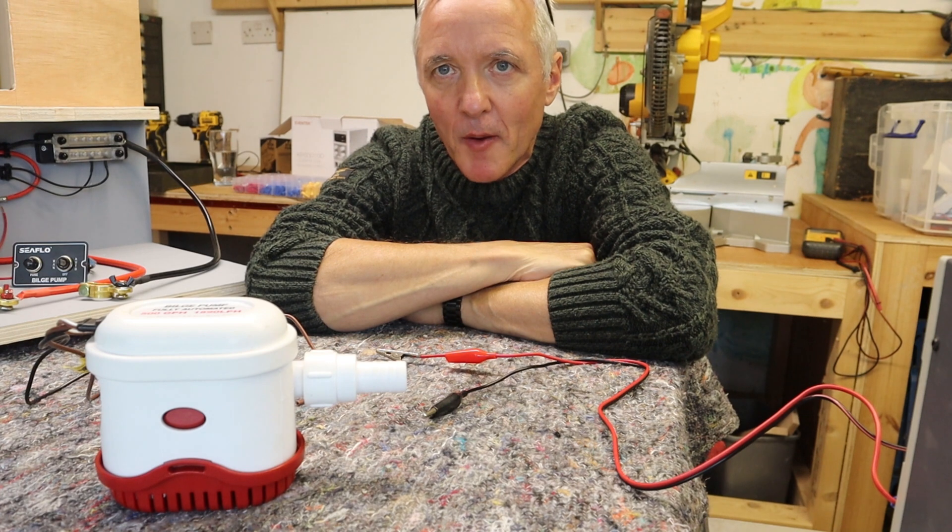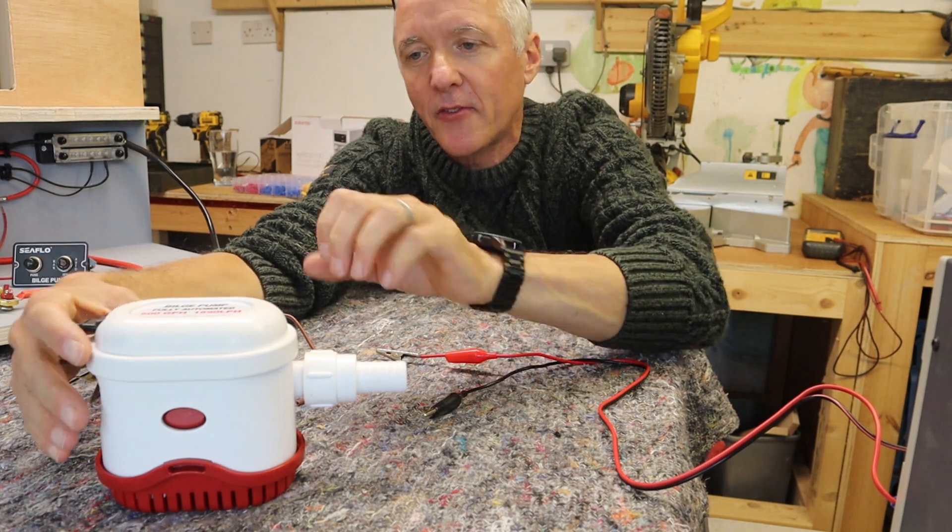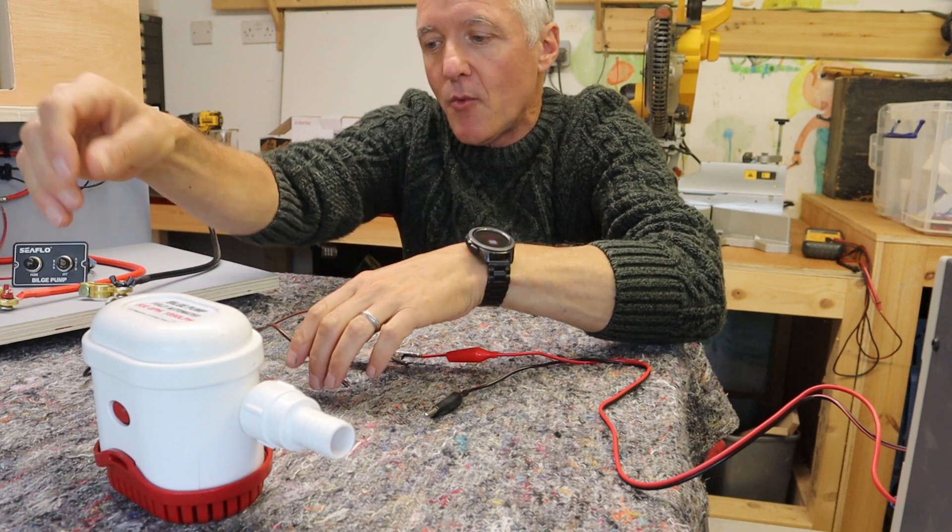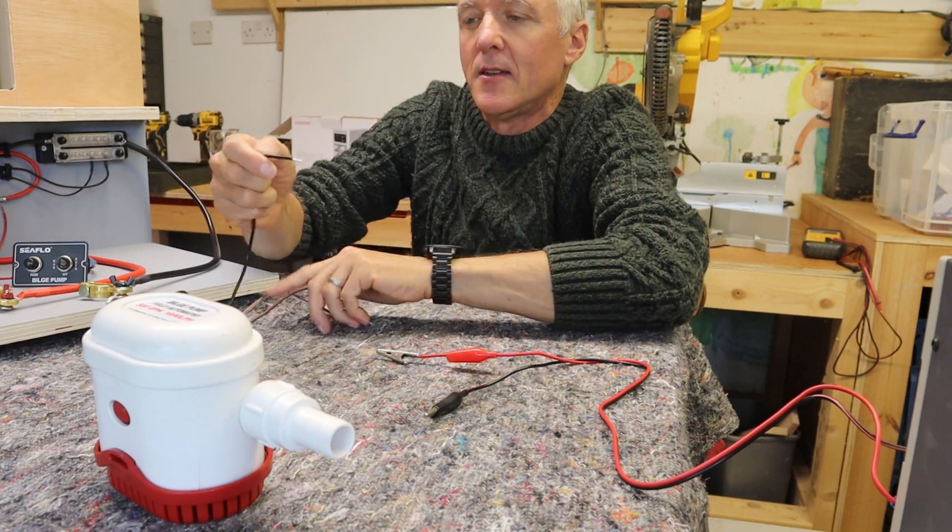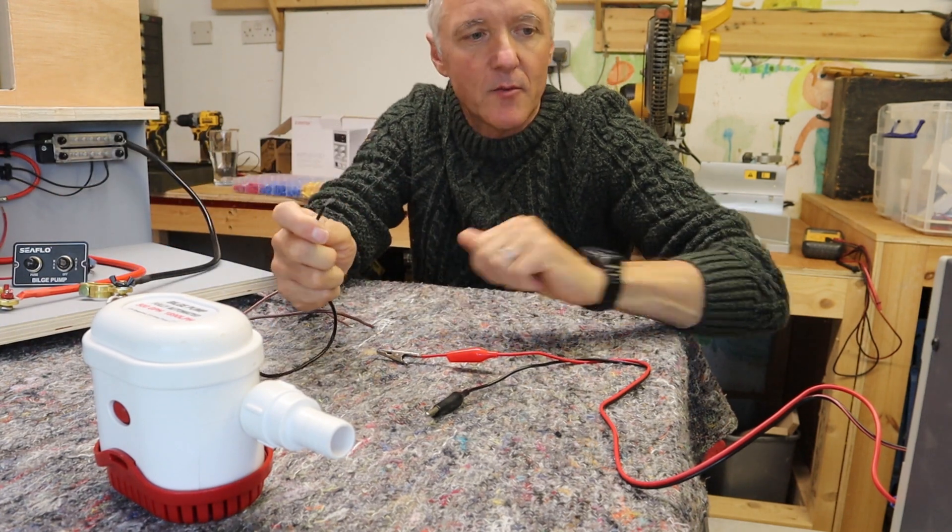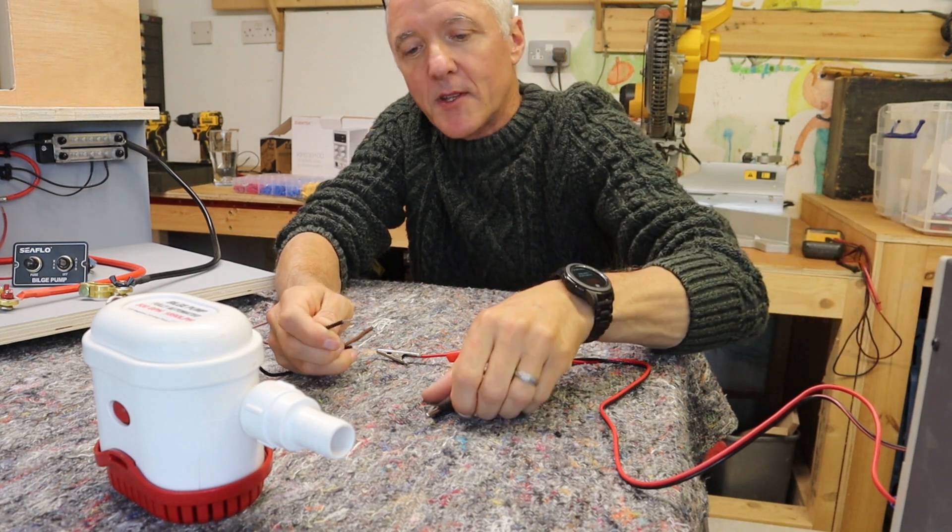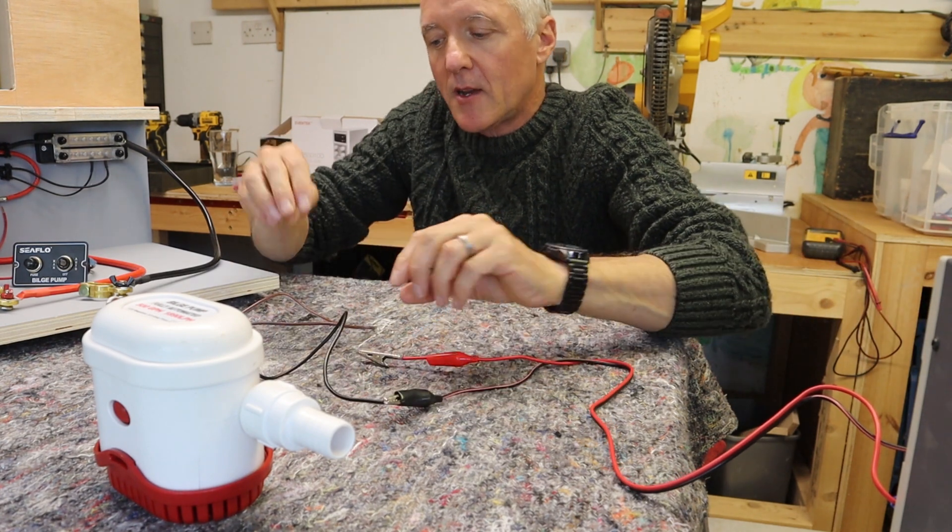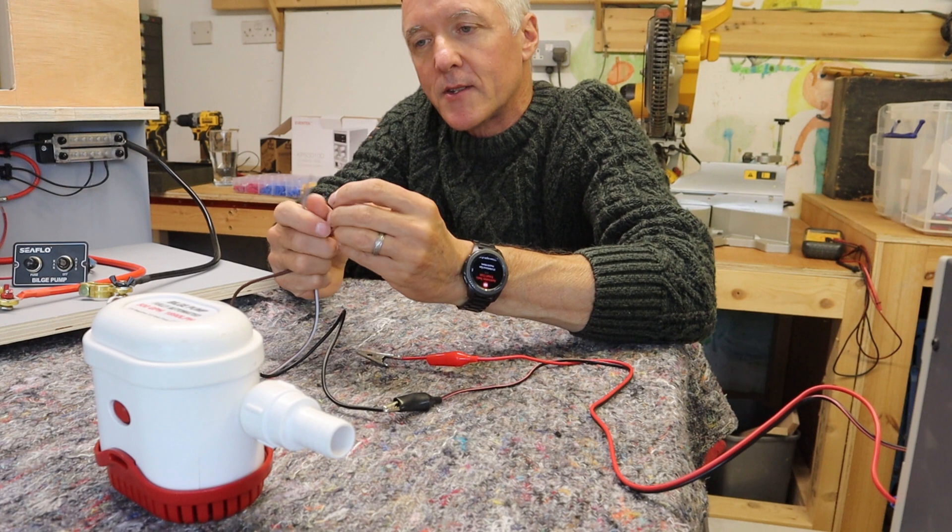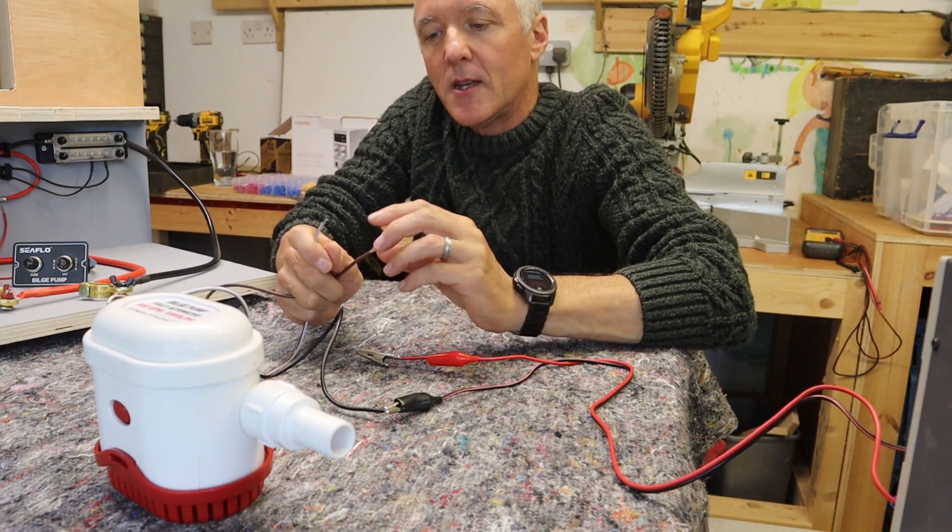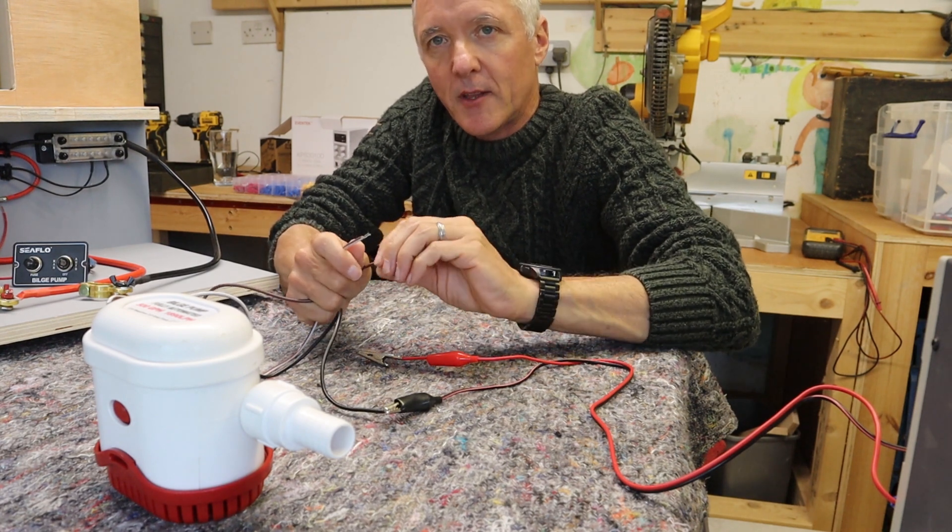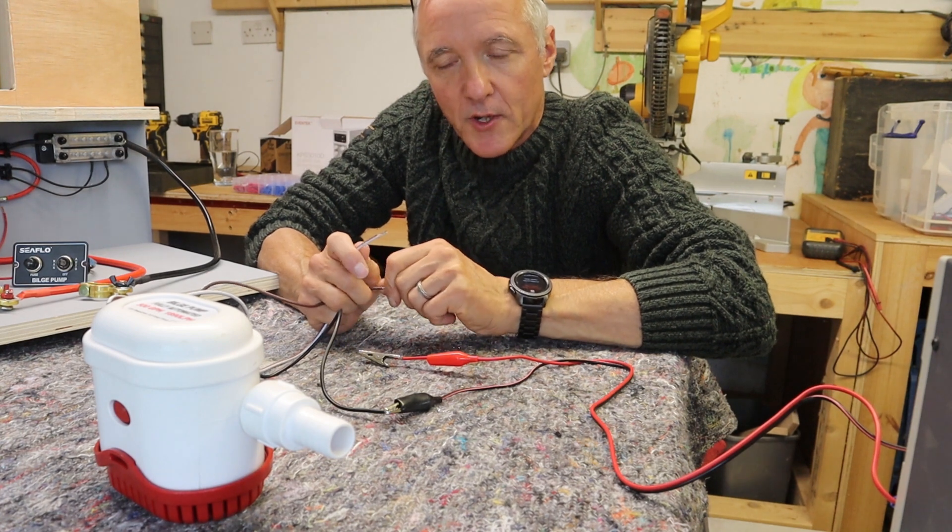So the other pump we're going to put into this system is this automatic bilge pump. It has three wires - we've got the negative which I'm going to hook up to the negative of the power supply, and we've got these two brown wires, one of them is for powering the pump manually and one is for auto mode.